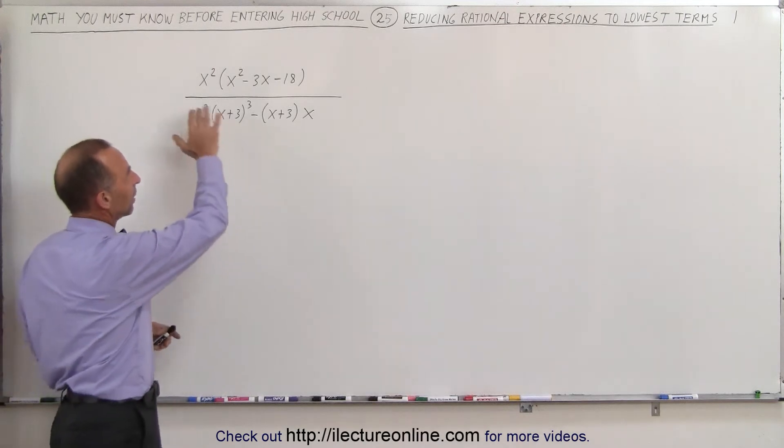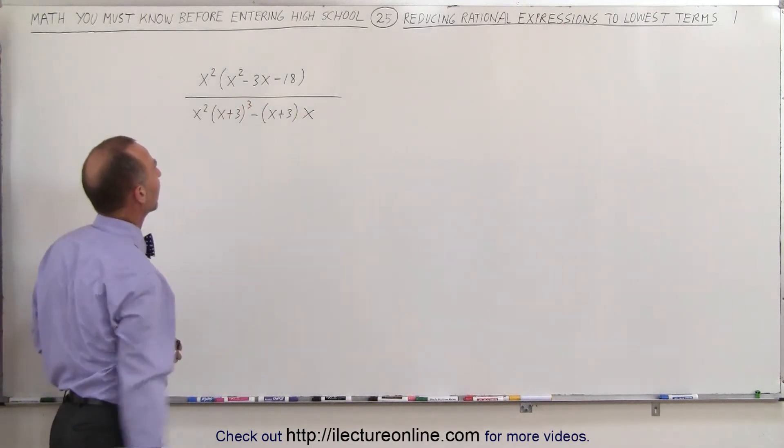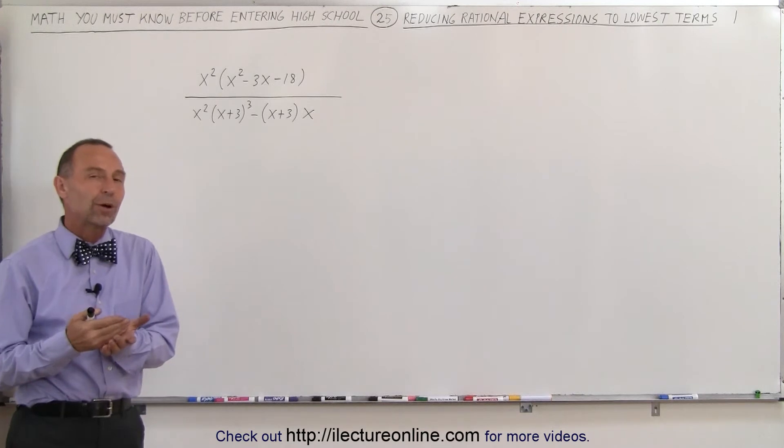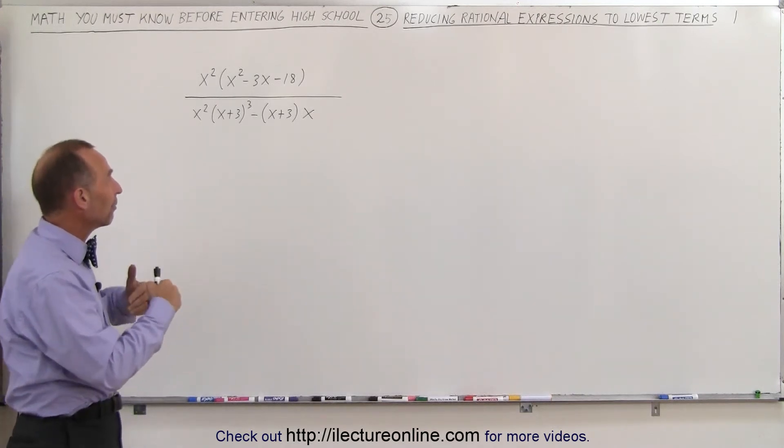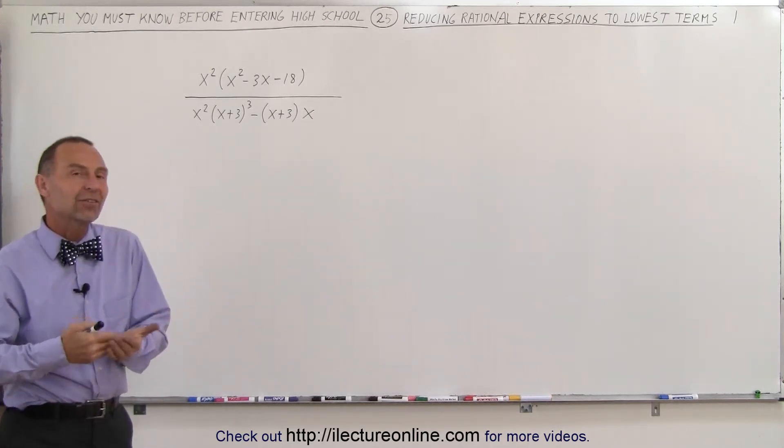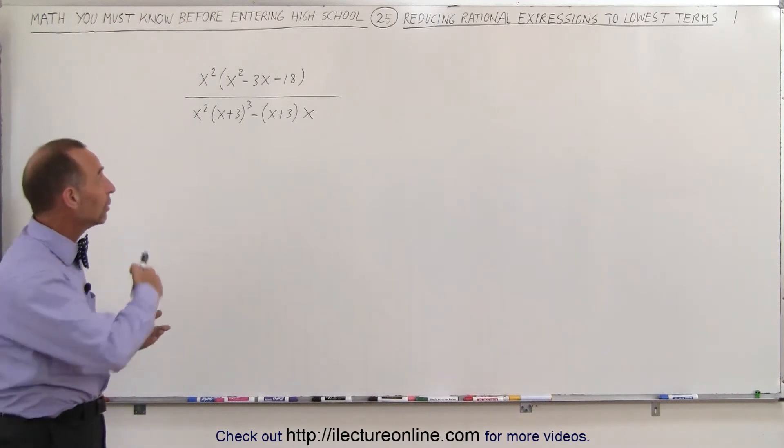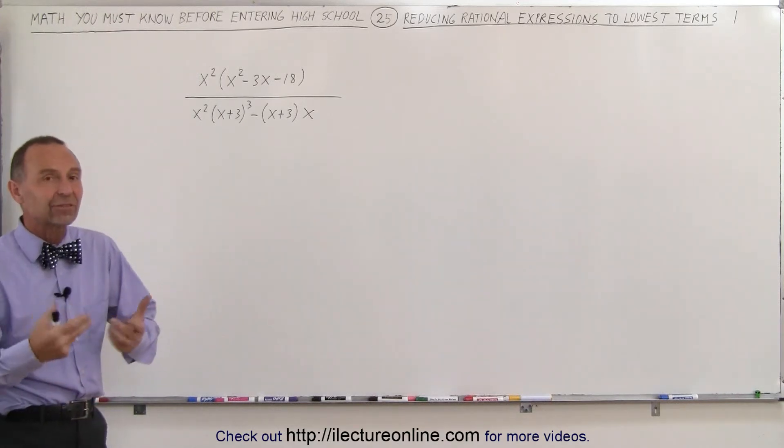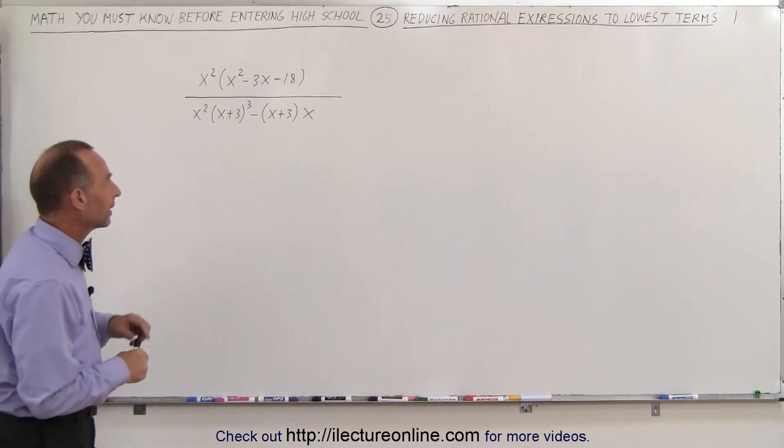Notice we have something complicated in the numerator and something complicated in the denominator. But the idea here is that we want to factor the numerator, we want to factor the denominator, and then see if there's any common factors between the numerator and denominator that we can cancel out. Alright, let's try that.